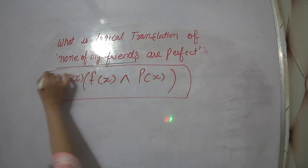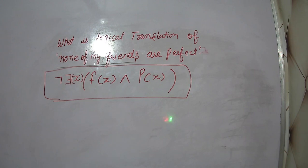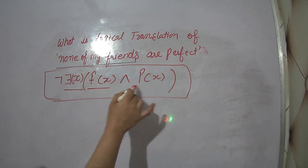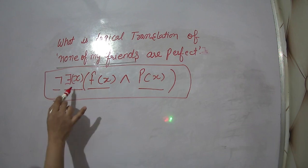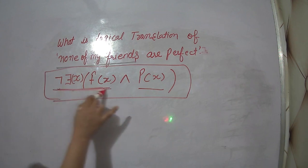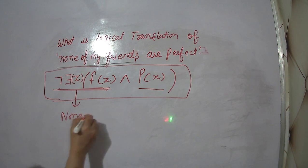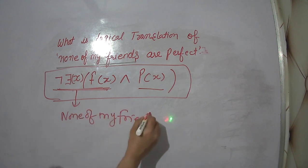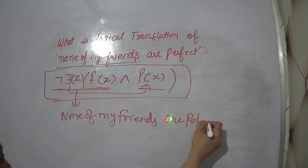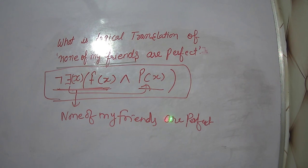This is a logical translation of 'none of my friends are perfect.' It means there exist none of my friends who are perfect. This part represents 'none of my friends,' and this represents 'none of my friends are perfect.'